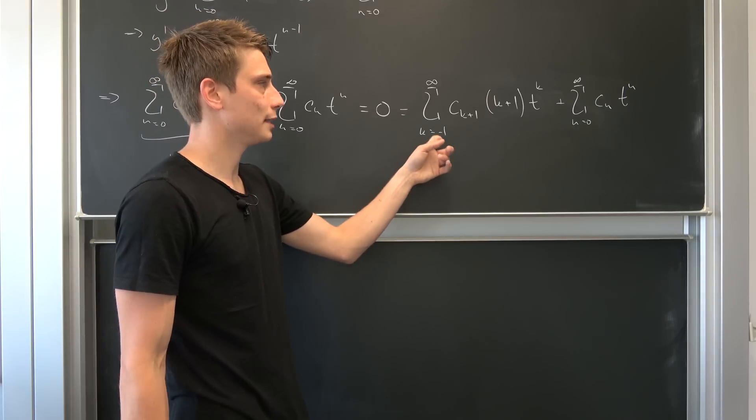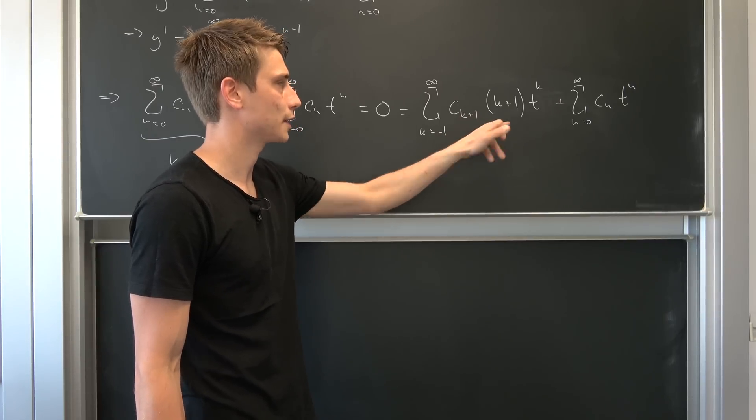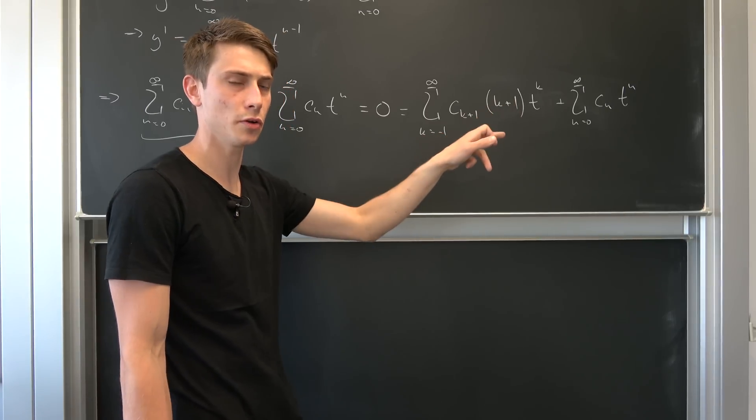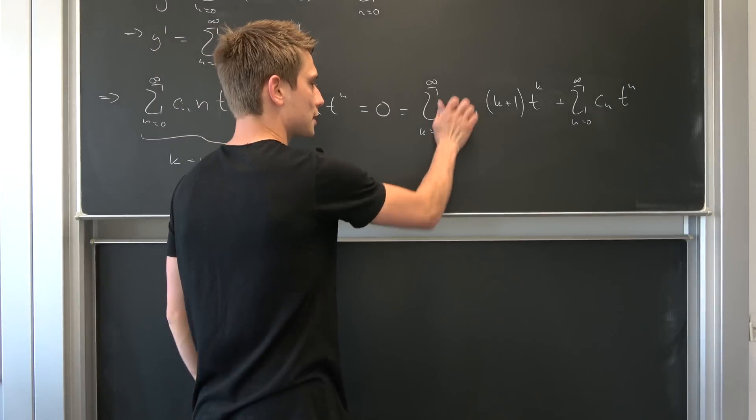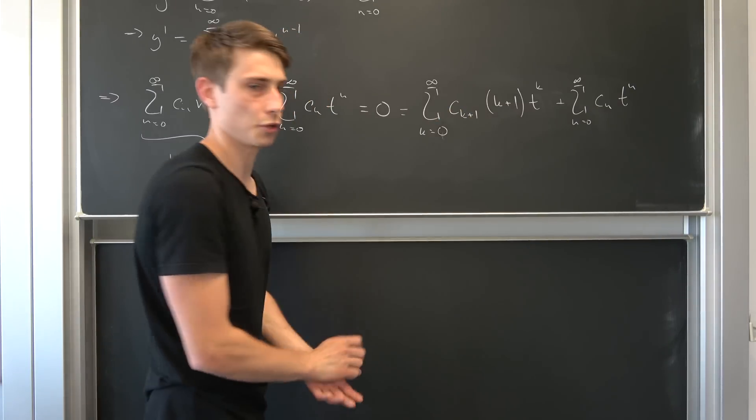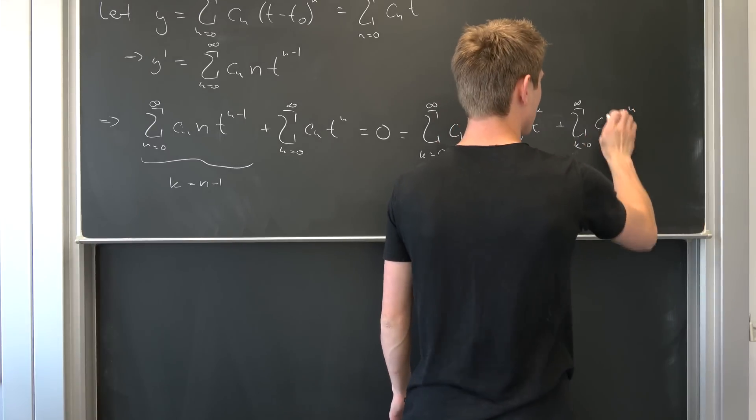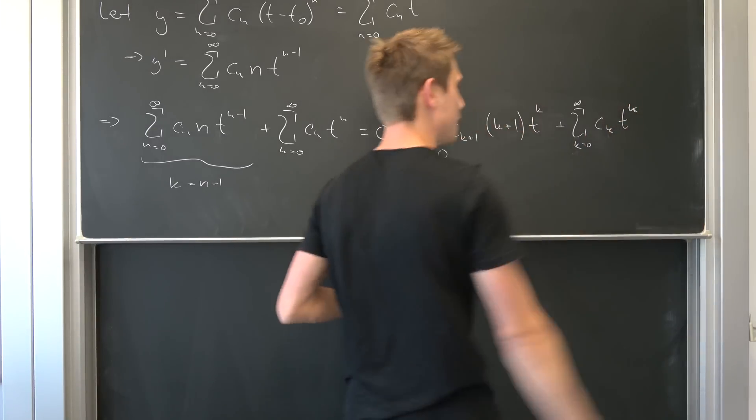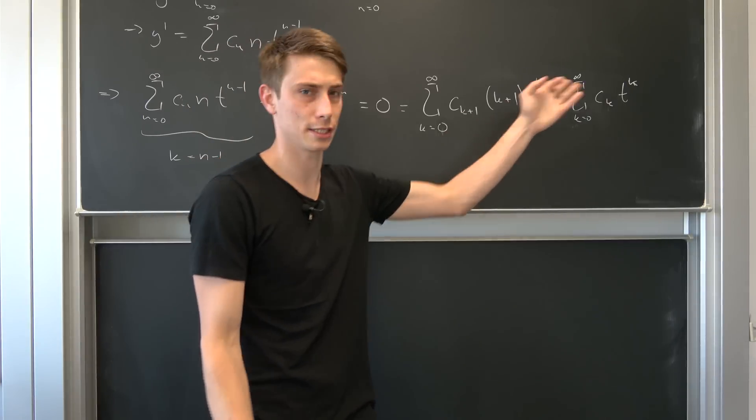And we want to get to k equals 0, and then we can change back to n. It doesn't matter what it's called. If we plug in minus 1 into this first member of the sum, well then we have minus 1 plus 1, that's 0. So that also means the first term of the series is just 0. And now we can change those n's to k's. Now we have k's and now we can bring those sums together and we can factor out t to the k.